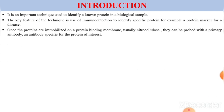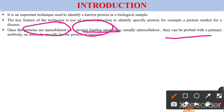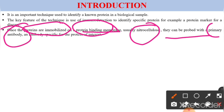Once the proteins are immobilized on a protein binding membrane — usually nitrocellulose — they can be probed with a primary antibody that is specific for the protein of interest. Nitrocellulose membrane is used everywhere, including in pregnancy kits. Once proteins are immobilized on this nitrocellulose membrane, they can be probed with the primary antibody.